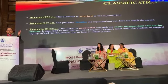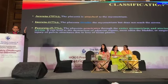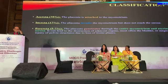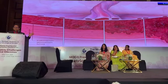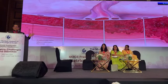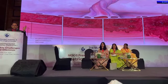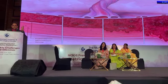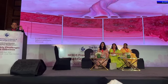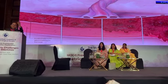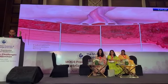Further, it is divided into accreta, increta, and percreta, accounting for approximately 75%, 70%, and 5 to 7% respectively. This picture nicely shows how a normal placenta is situated, and as it progresses due to the absence of these two layers, we have accreta where it is up to the myometrium, increta invading into the myometrium, and percreta going beyond the serosa — which is the worst scenario.